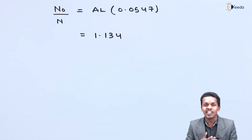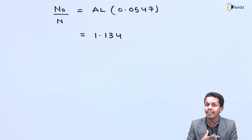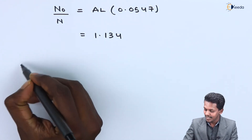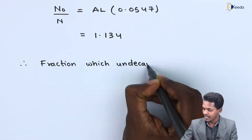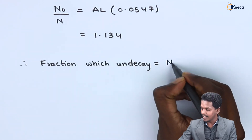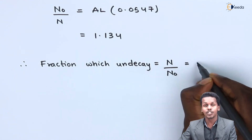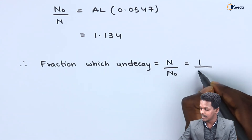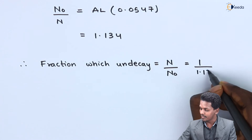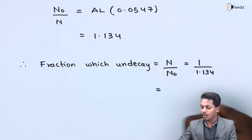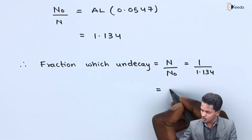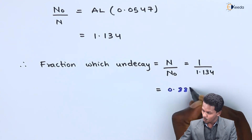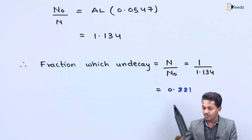From N₀/N = 1.134, we can find the undecayed fraction, which is the reciprocal: N/N₀ = 1 / 1.134 = 0.881. So 0.881 is the fraction of the sample that remains undecayed.